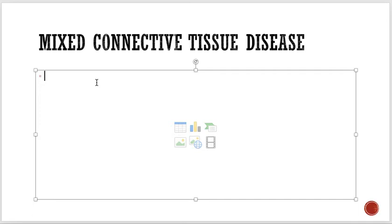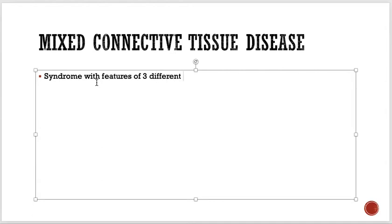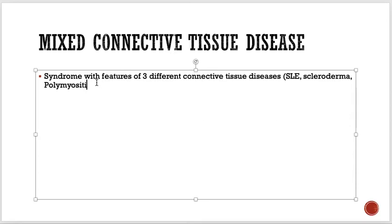Mixed connective tissue disease is a syndrome with features of three different connective tissue diseases. For example — SLE with scleroderma with polymyositis. The patient will have some features of each. Most people who have mixed connective tissue disease have some common symptoms.